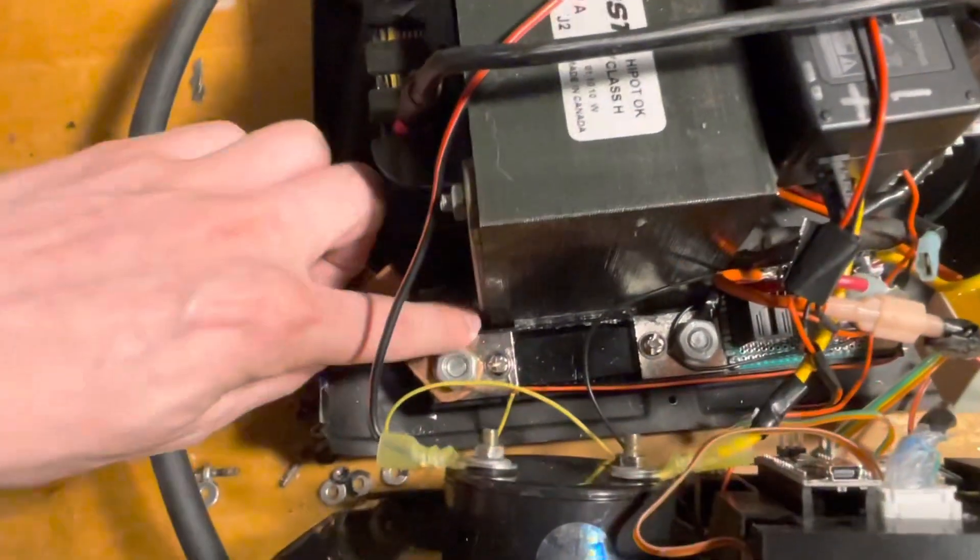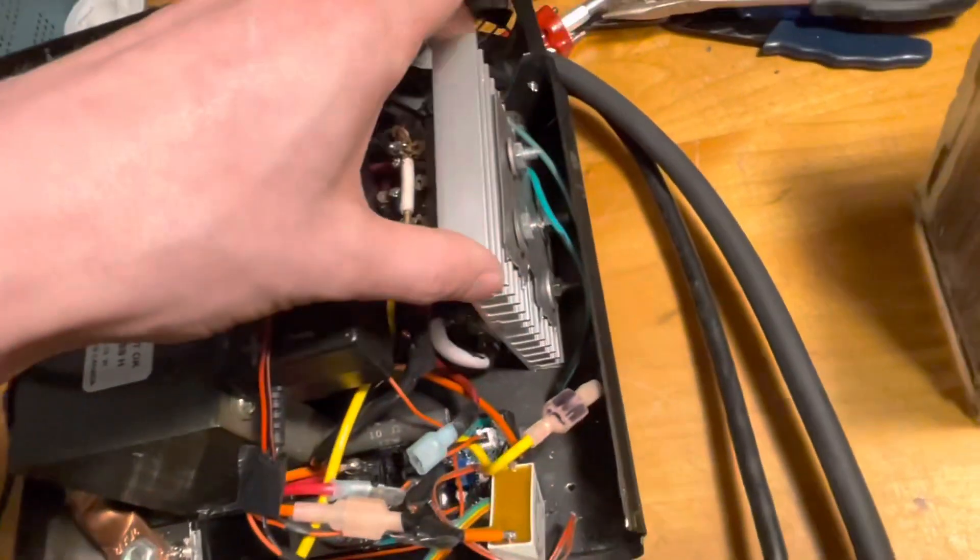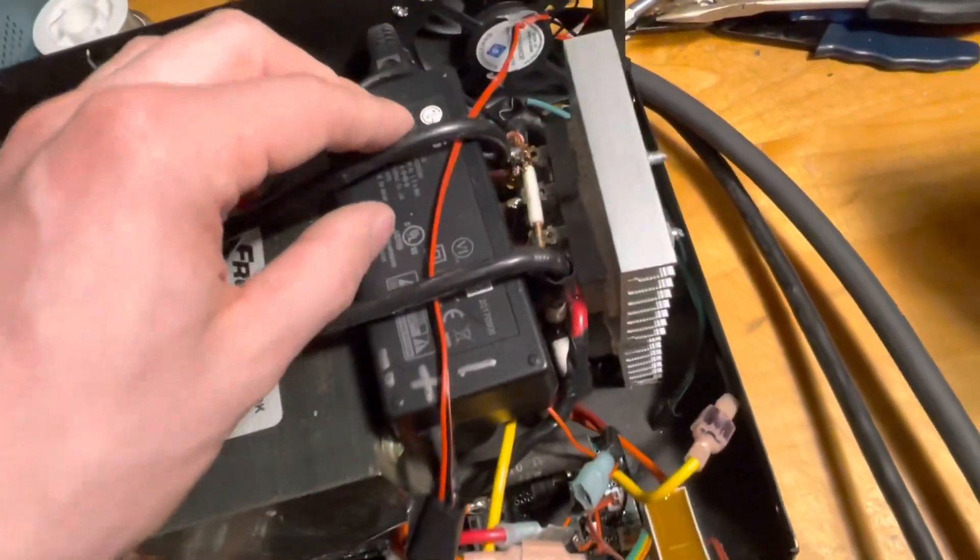This is our output and that runs through here. We also have another output down there that you can't see. This is a full bridge rectifier and then the power supply running all the low voltage.